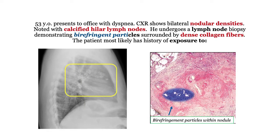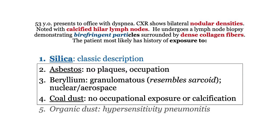Let's start with the big-ticket items: nodular densities and calcified hilar nodes. The left image is one of my patients with a bumper crop of calcified nodes — they aren't subtle. The question also describes a lymph node showing birefringent particles and dense collagen fibers. The correct answer is exposure to silica, with the question stem offering a pretty classic description of the radiograph and pathology.